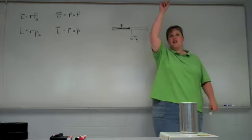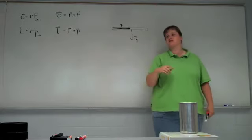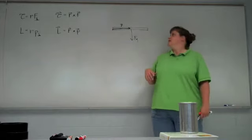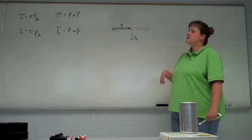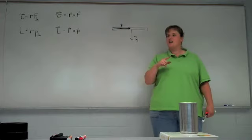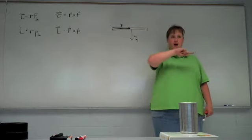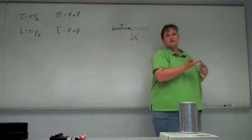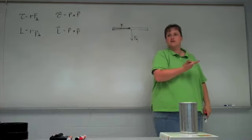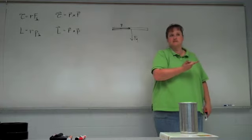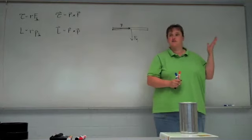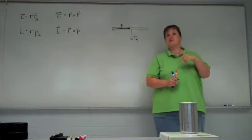If to the right is positive X and up is positive Y, then out of the board has to be positive Z — and that's because it's a right-handed coordinate system. What that means is i cross j is positive k. Our traditional Cartesian coordinate system is a right-handed coordinate system; that's what we call it, and it's because the right-hand rule works. There are left-handed coordinate systems where the left-hand rule works, just backwards from the right-handed system.